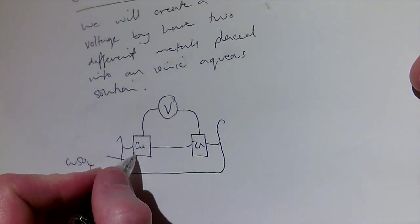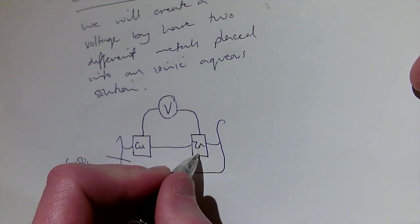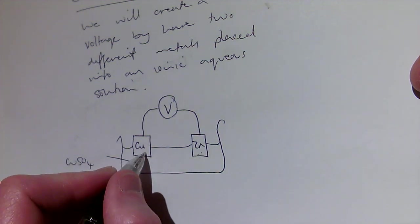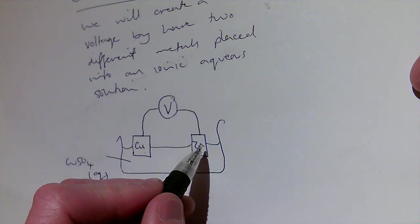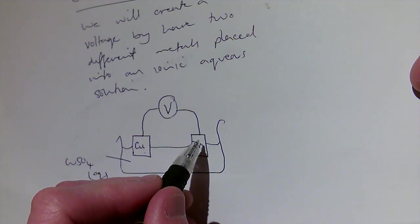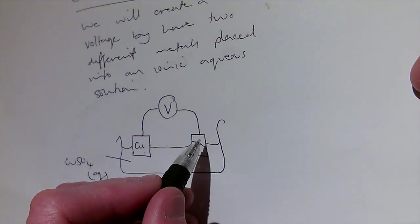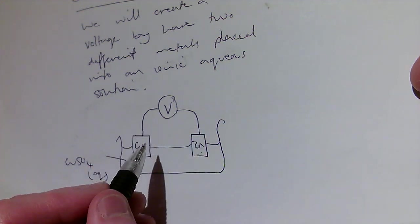Because the copper is less reactive than the zinc, or if you want to put it the zinc is more reactive than the copper, then the zinc would like to lose electrons more easily, it will lose electrons more easily than the copper, and as a result, charge will flow around the circuit.